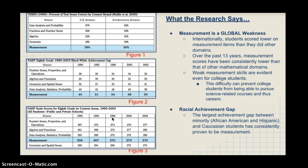Looking at the research, measurement is found to be a global weakness in general. Figure one shows that the U.S. scored lowest on measurement compared to other domains in terms of the percentage of correct questions answered. Internationally, every country was scoring lower on measurement than in other categories. Over the past 13 years, measurement scores have been consistently lower than those of other mathematical domains.